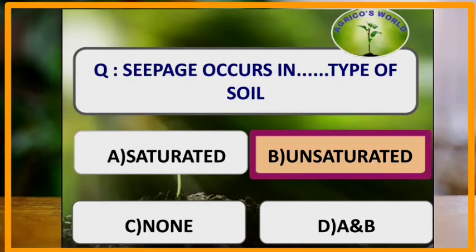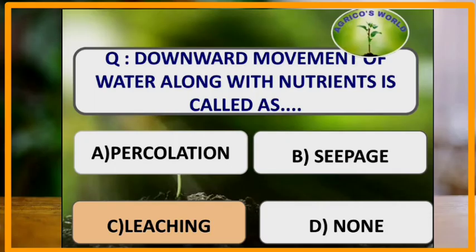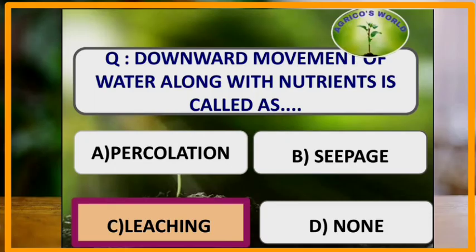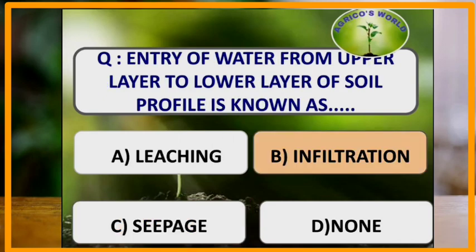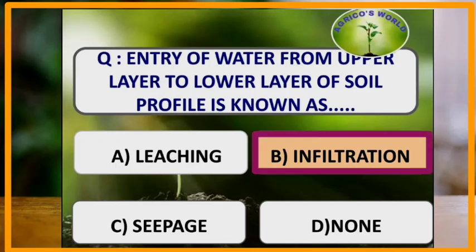Seepage occurs in unsaturated type of soil, whereas percolation occurs in saturated type of soil. Seepage means the horizontal movement of water. Downward movement of water along with the nutrients is called leaching, whereas just the downward movement of water without nutrients is called percolation. Entry of water from the upper layer of soil to the lower layer is known as infiltration.